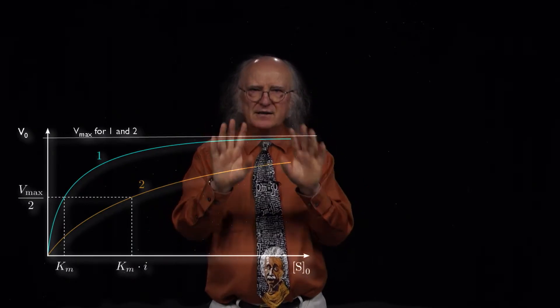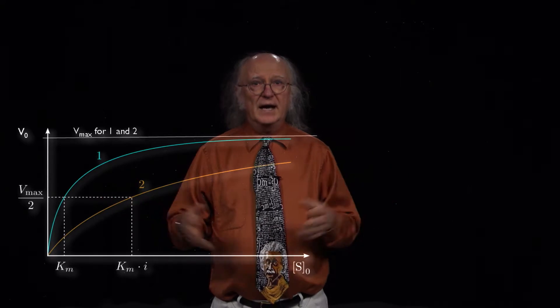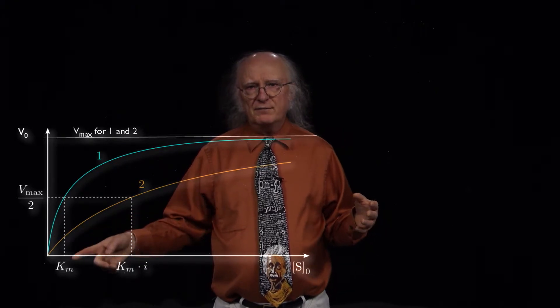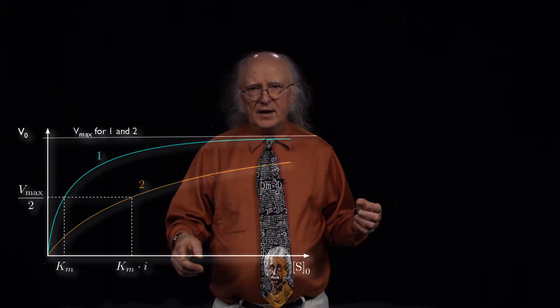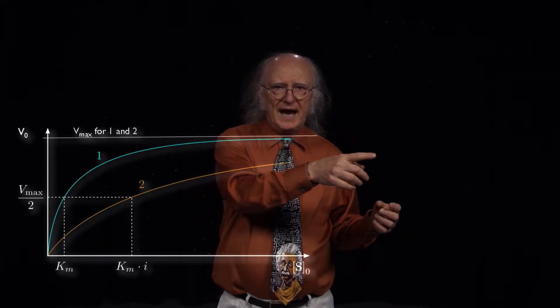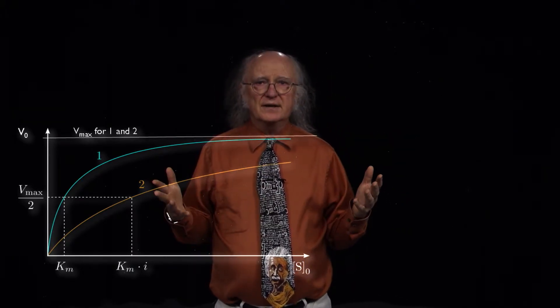If I do the same reaction and add a fixed amount of inhibitor — this is really important — in all of the reactions I use a fixed amount of inhibitor, because I don't want two variables. I only want to vary substrate concentration. In the bottom plot with a fixed amount of inhibitor, the velocities are lower at low substrate, but as I keep adding more and more substrate, the velocity for the inhibited reaction gets closer and closer to Vmax. Eventually, if I get enough substrate, it will reach Vmax.